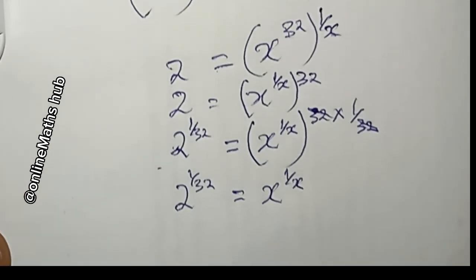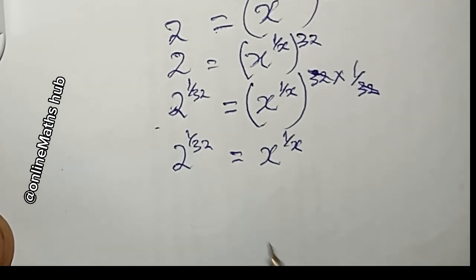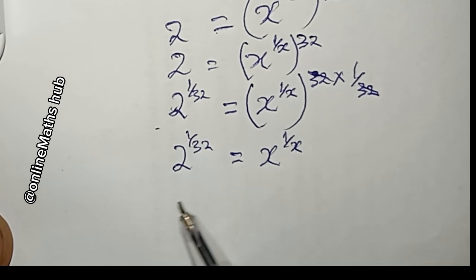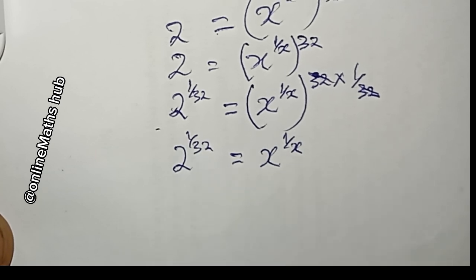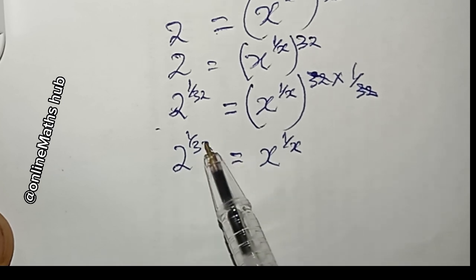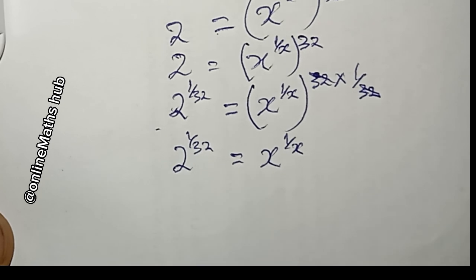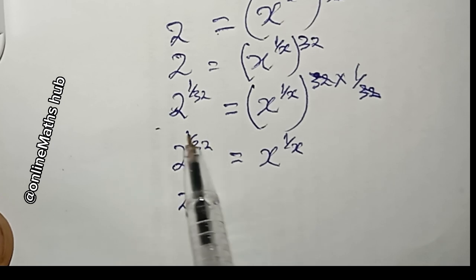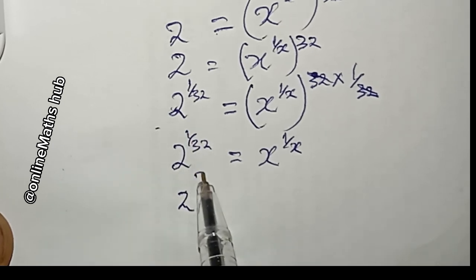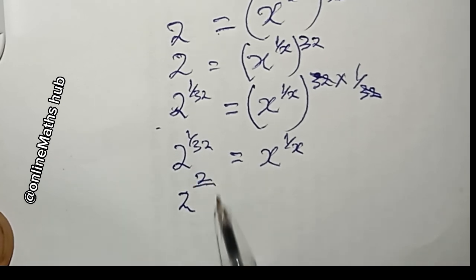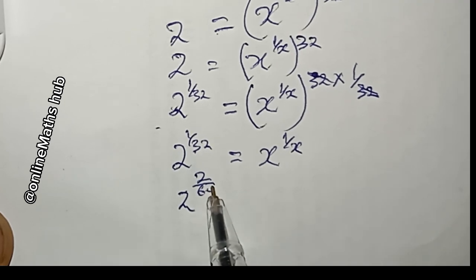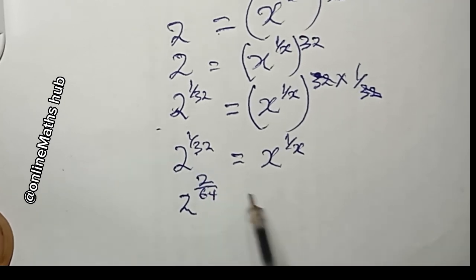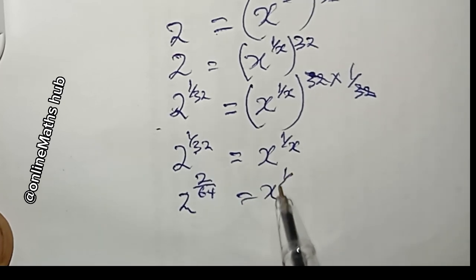I'm going to manipulate the left hand side to match the pattern on the right hand side so I can compare both sides. I'll multiply the numerator and denominator of the exponent by 2 to get an equivalent fraction, giving 2 to the power 2 over 64, which equals x to the power 1 over x.